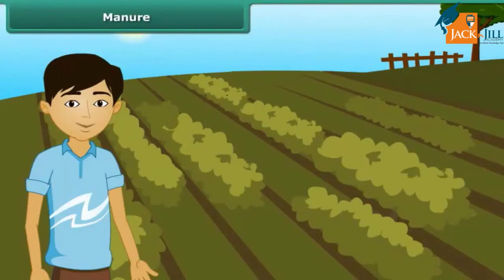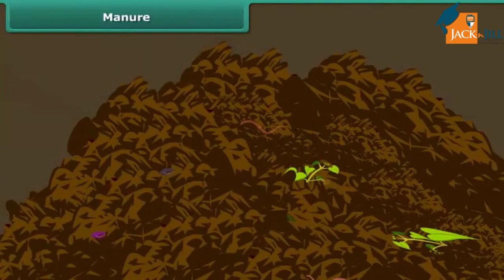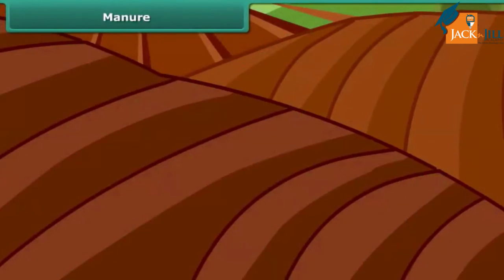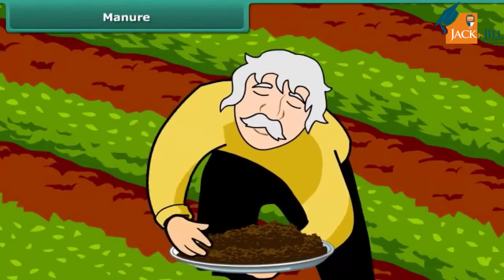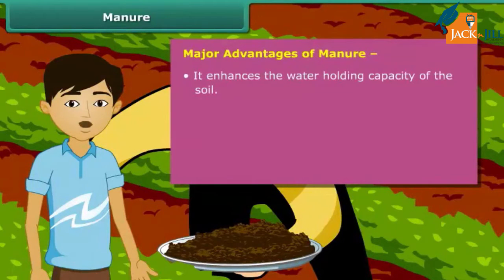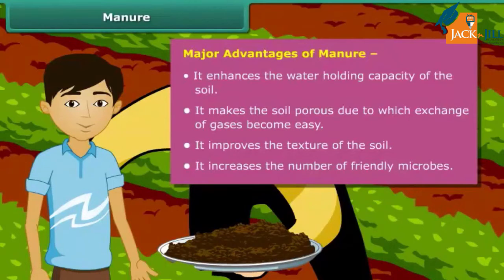Manure is an organic substance obtained from the decomposition of plant and animal wastes. Farmers dump plant and animal wastes in pits where they are decomposed by microorganisms. Soil fertility and nutrients are reduced due to repeated cultivation, so farmers add manure to replenish the soil. Manure enhances the water-holding capacity of the soil, makes the soil porous so exchange of gases becomes easy, improves texture of the soil, and increases the number of friendly microbes necessary for a healthy crop.